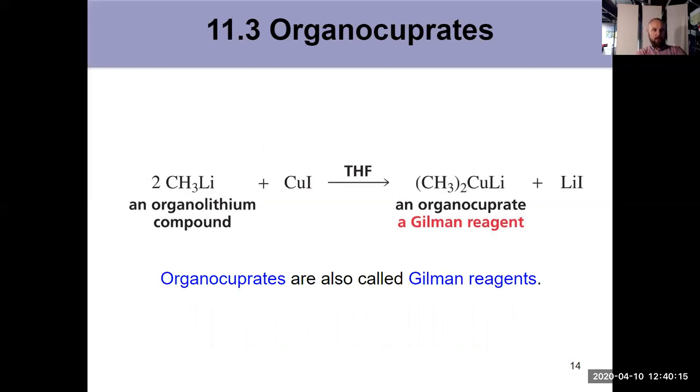Organocuprates are prepared by taking an organolithium and introducing it to copper iodide in THF. Organocuprate, also known as a Gilman reagent over here on the right, named after Henry Gilman who first did these. This is an example of a transmetallation reaction that happened because it's less polar.